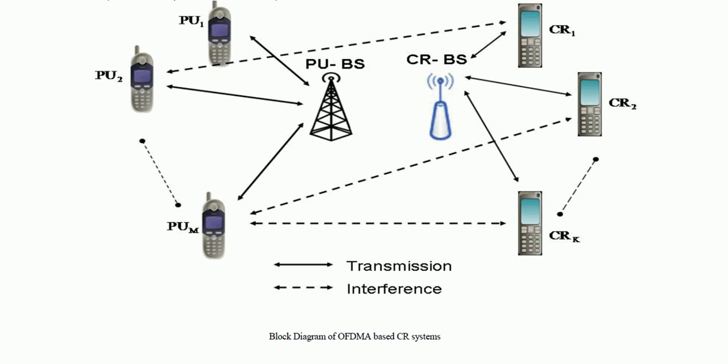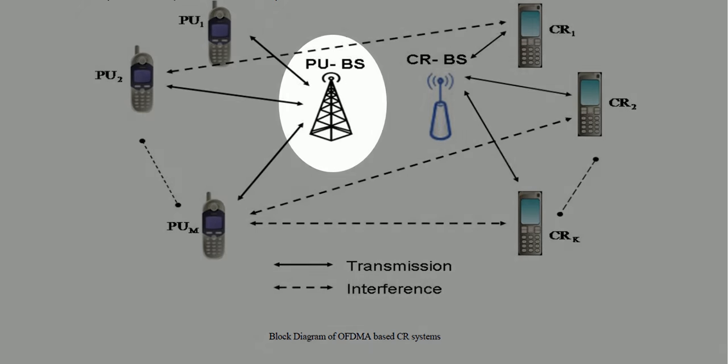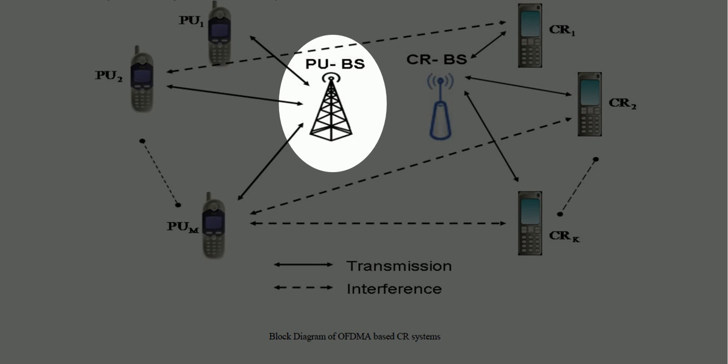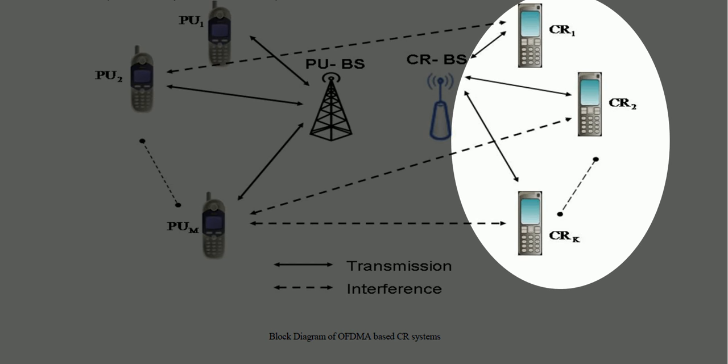A cognitive radio system essentially comprises four components: the primary users, a base station for primary users, cognitive radio base station and cognitive radio users. They are sometimes also known as the secondary users.